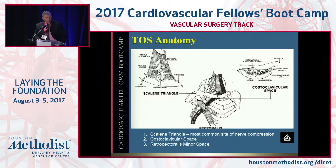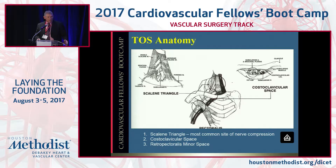Here's some more anatomy in terms of the scalene triangle, which is the most common site for nerve compression, the costal-clavicular space, and the retropectoralis minor space.